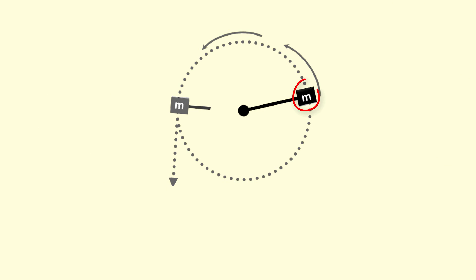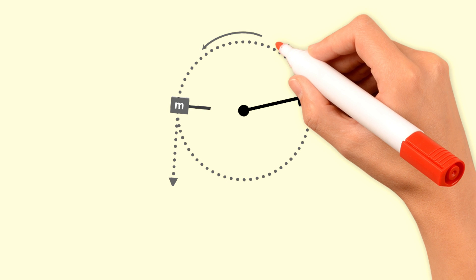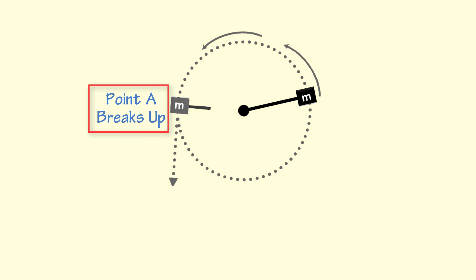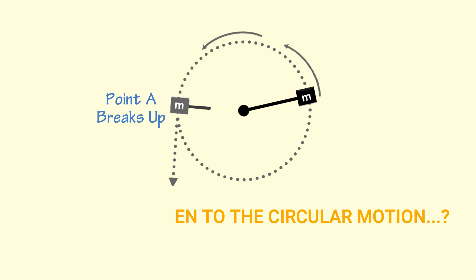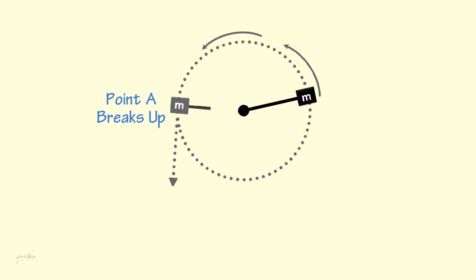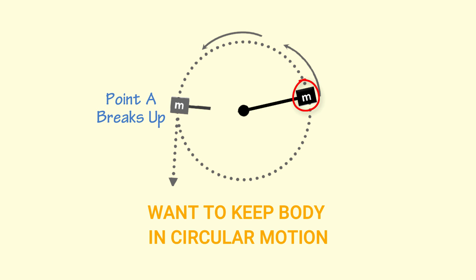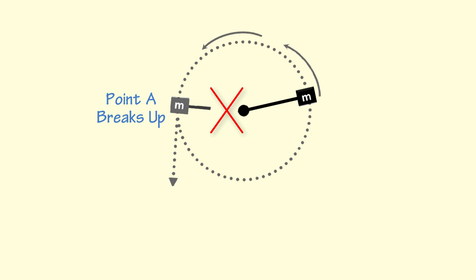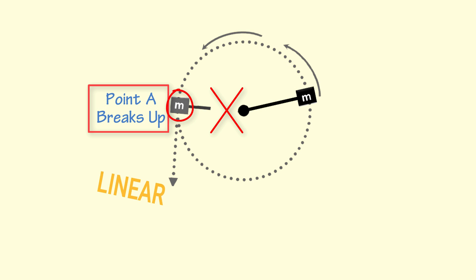Now let's consider that mass m is attached to a string and the string is tied to a fixed point. Let mass m be moving on a circular path, so it is in circular motion. Now, if at point A the string breaks up, then the mass will no longer move in a circular path. Rather, the mass will start moving in a straight path. Thus from this example, we learn that if we want to keep a mass or body in circular motion, we need a string that compels mass m to move in a circular path. If there is no string, or if the body is no longer attached to a string as at point A, the mass will move in a straight line.